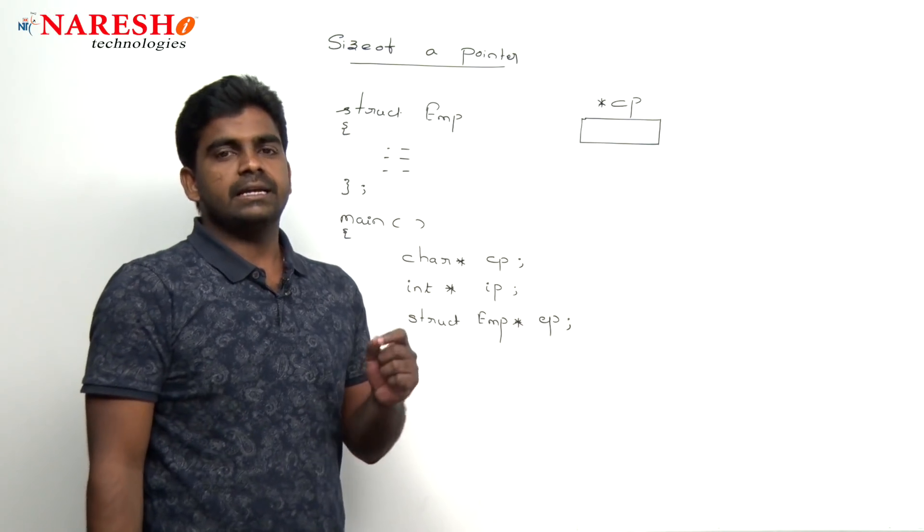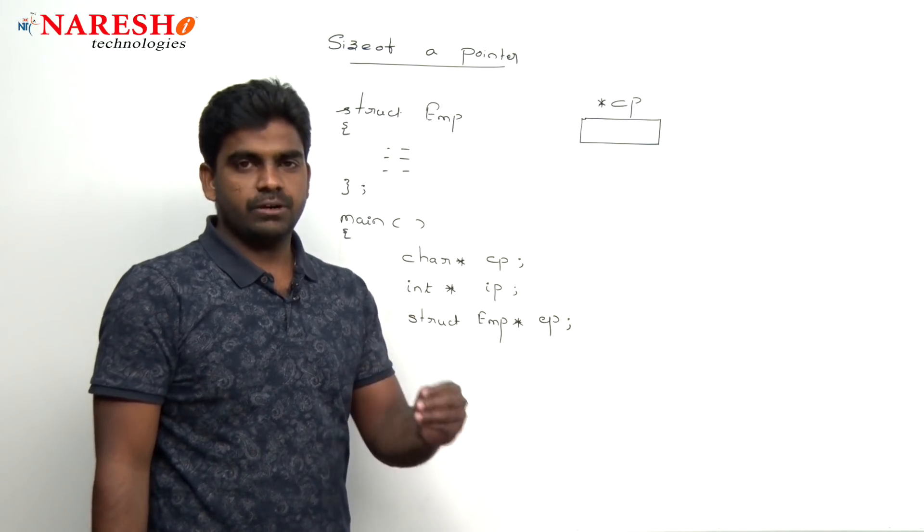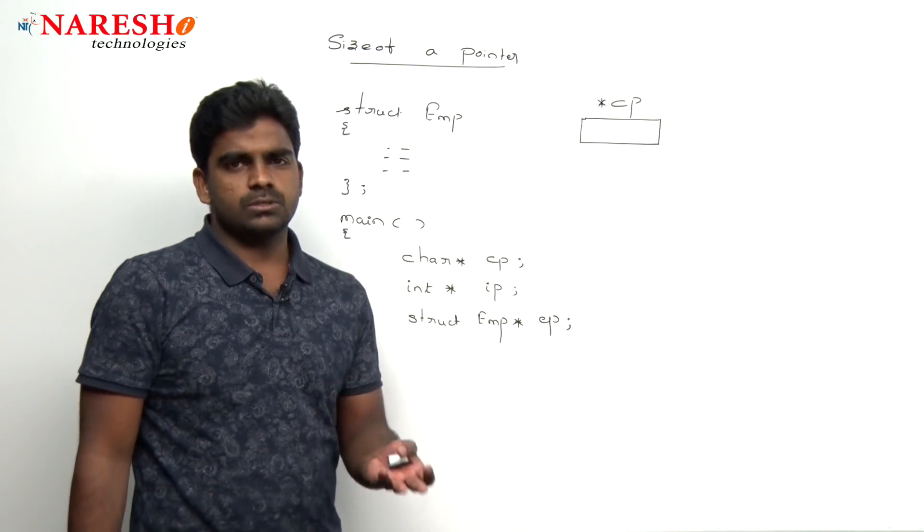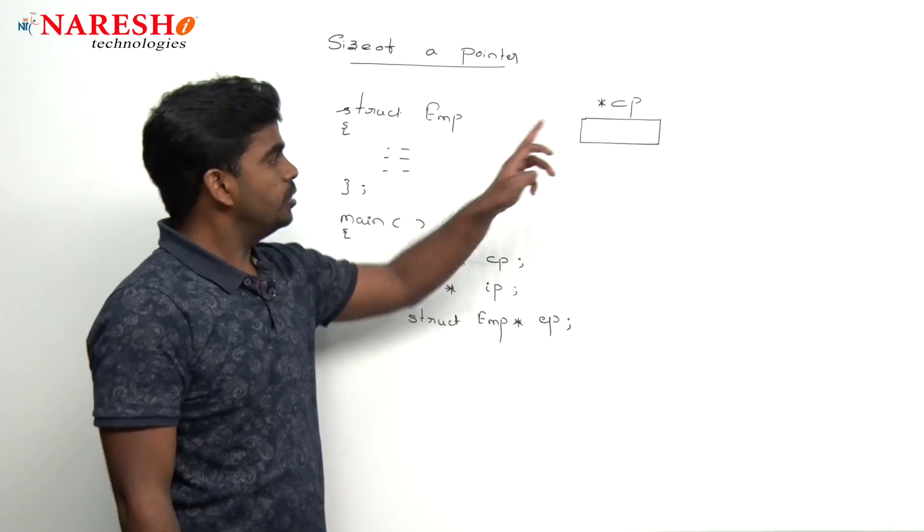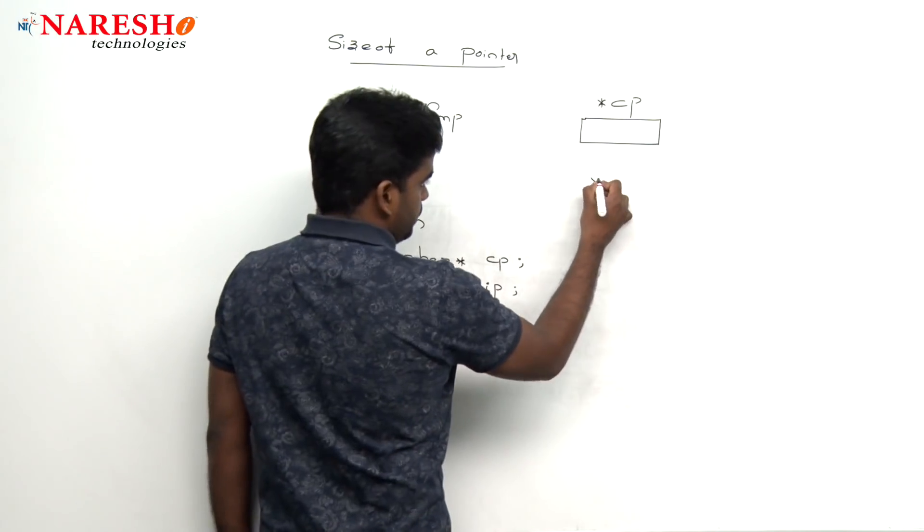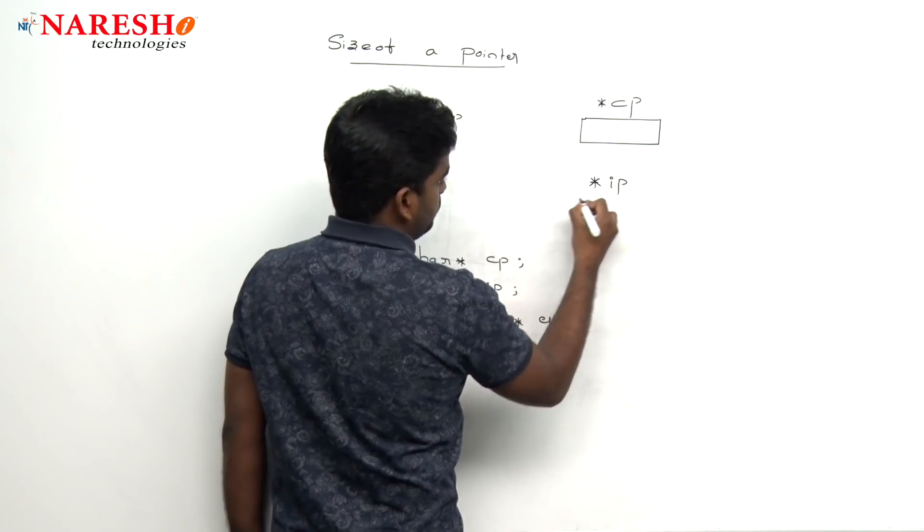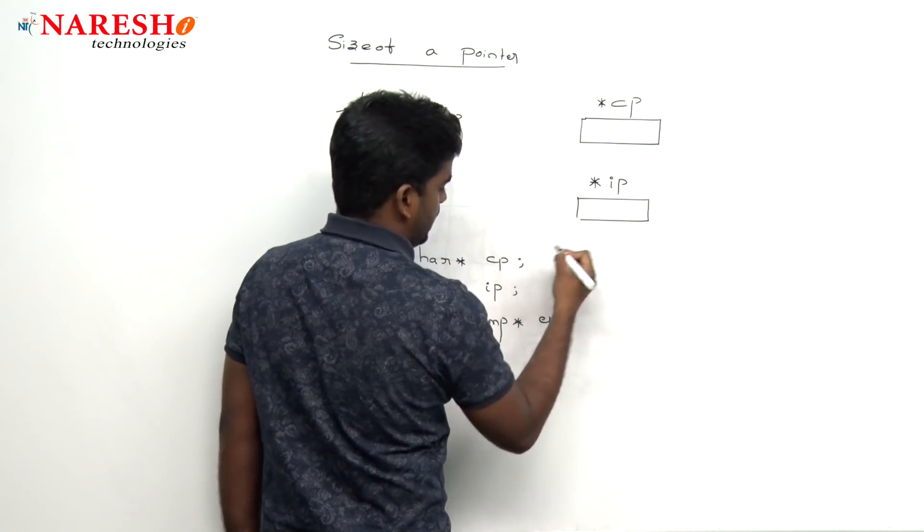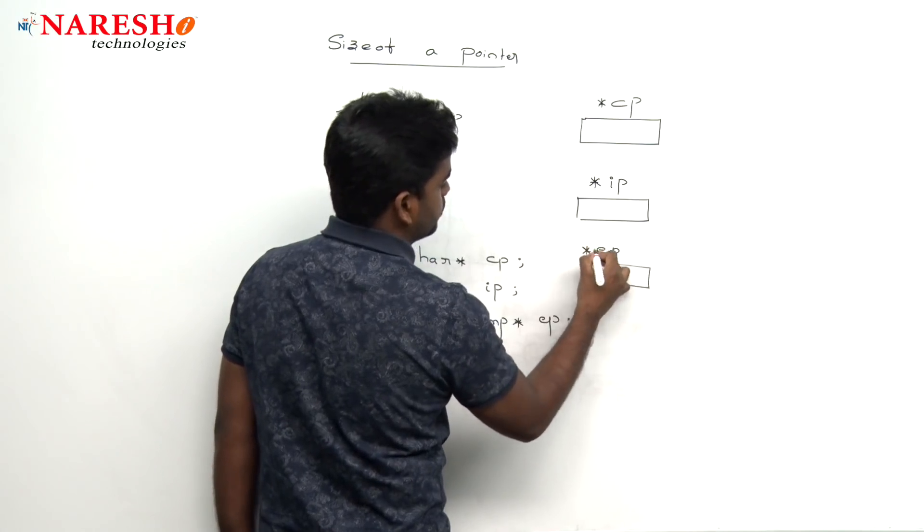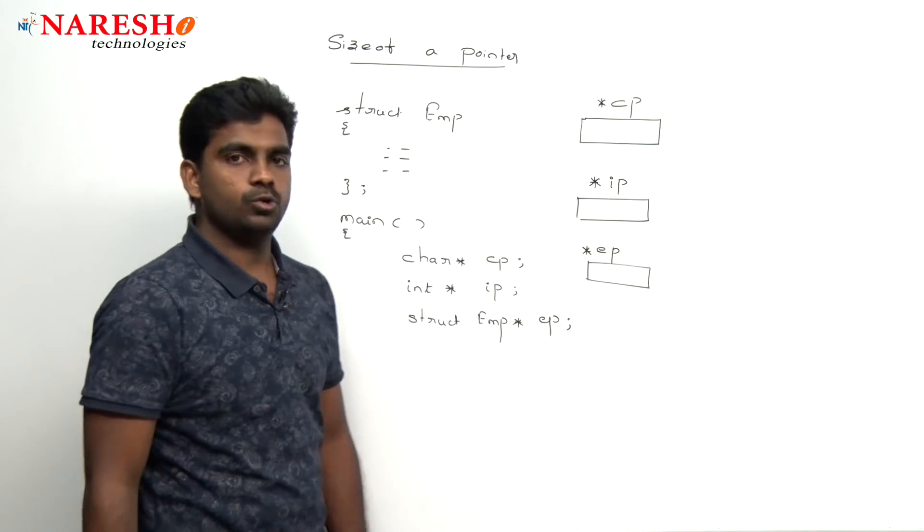Just consider integer size is 2 bytes, nothing but we use a 16 bit compiler, then the pointer size is also 2 bytes only. So 2 bytes memory will be allocated. In the same way for ip, 2 bytes memory and here it is for employee pointer also 2 bytes memory, it is 2 bytes.